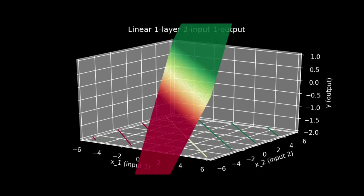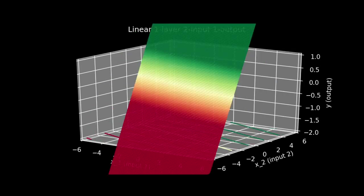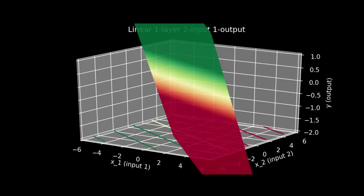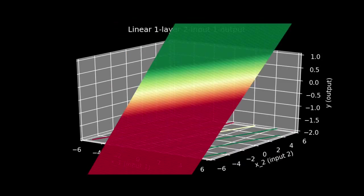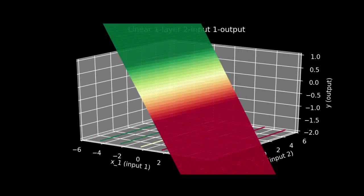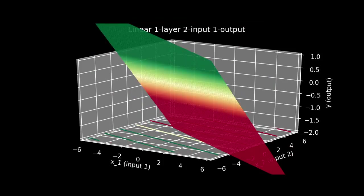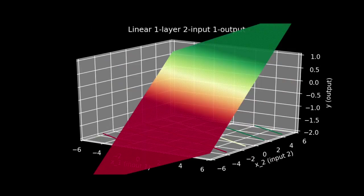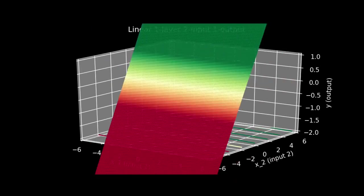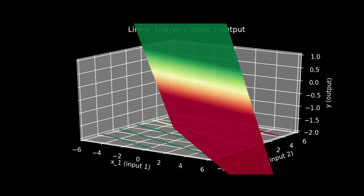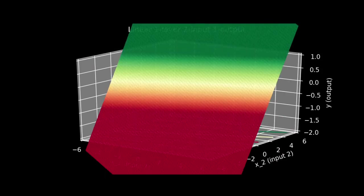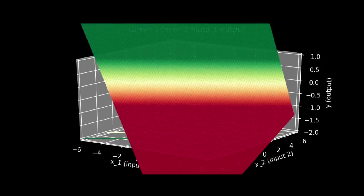For this three dimensional case, we can again look at the models that emerge when we randomly choose our w sub i,0s, our weights. As we would expect, we still get the three dimensional equivalent of a line, a plane in this case. And if we were to extend this to more inputs, we would get the m dimensional equivalent of a line, which is called an m dimensional hyperplane.